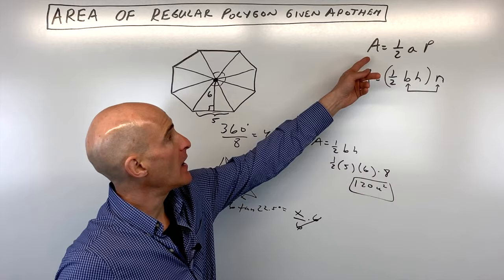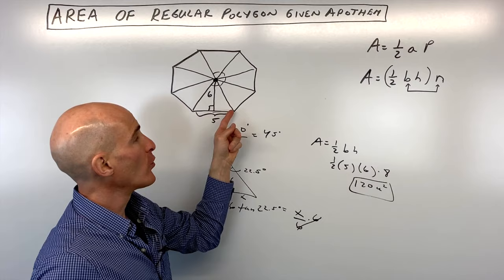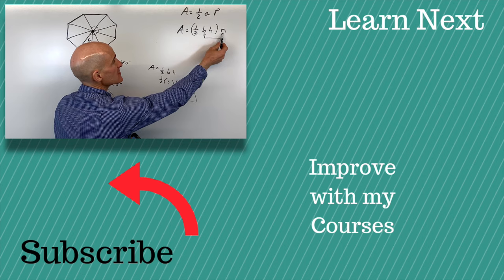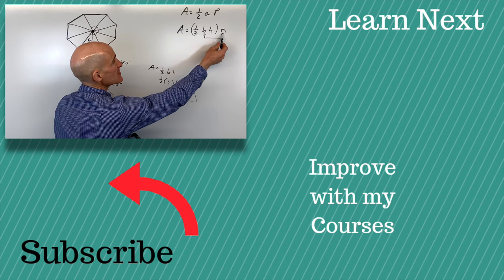Now, if you want a formula, a lot of students like to use a formula. Area equals 1 half apothem times perimeter. And the perimeter is the distance, of course, all the way around. Or you can use 1 half base times height. That's the area of a triangle times n, the number of triangles. Notice that n times b, the base times however many of those bases you have, is equal to the perimeter. And the height of the triangle is the apothem. So the two equations are equivalent.